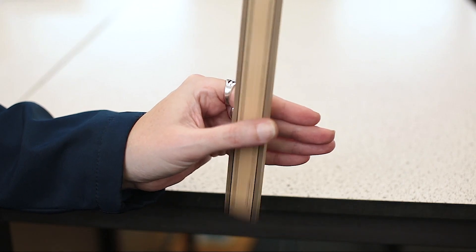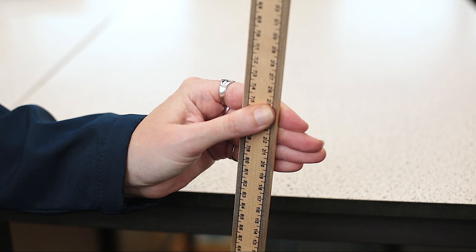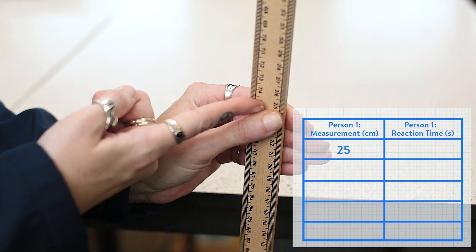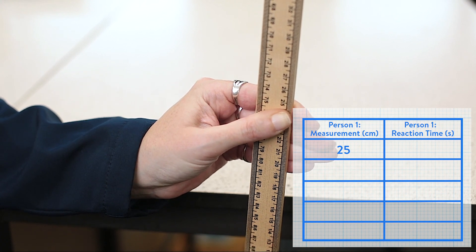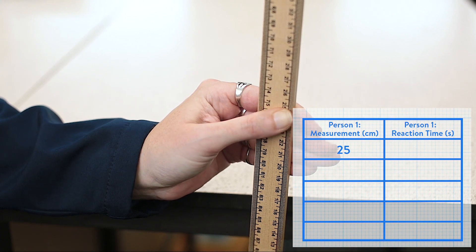Person 2 lets go of the ruler, and person 1 should catch this using their thumb and first finger only. The number which is level with the top of person 1's thumb is read off the ruler and recorded in the table.